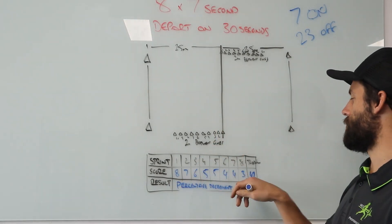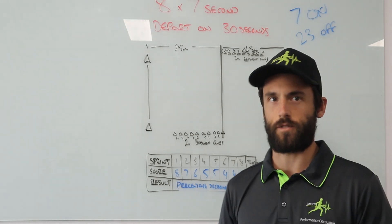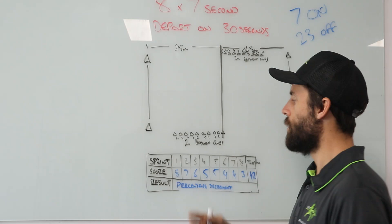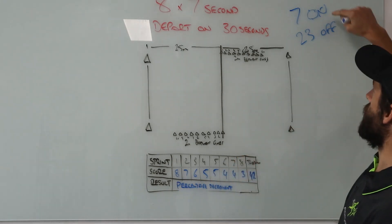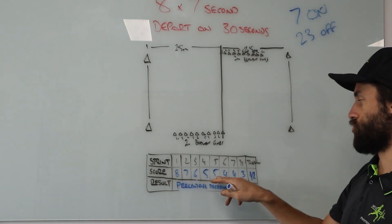If we maintained eight for all eight runs we would have got a score of 64. This athlete got a score of 42, so we're going to say that's a drop off 64 to 42, we'll get a percentage drop off which is how we score.